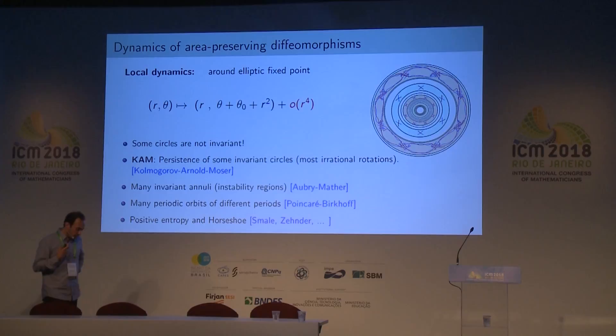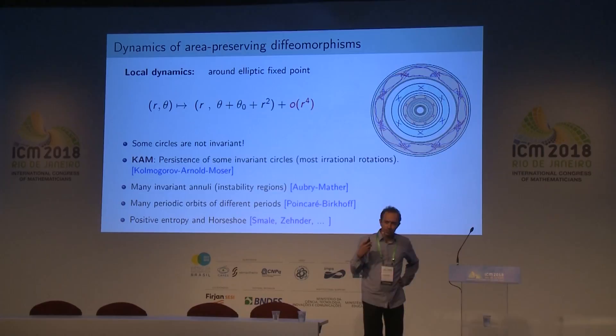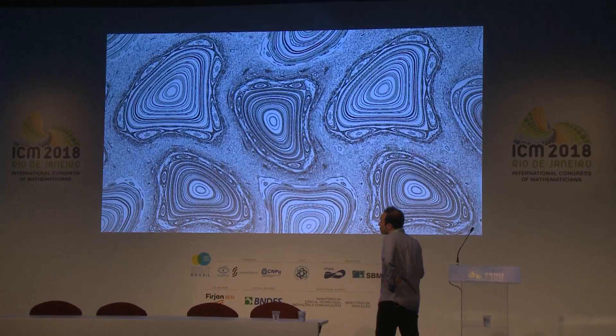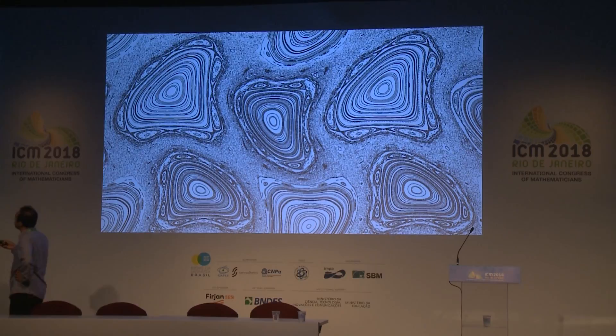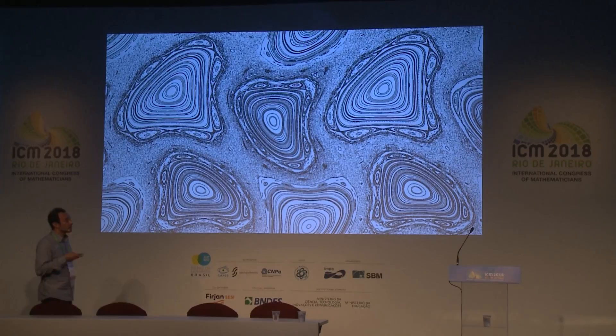Those periodic points generate very rich dynamics, and we observe the existence of homoclinic intersections, which provide horseshoes and hyperbolic behavior. This local picture, while not describing everything around the fixed point, accounts for a considerable part of the dynamics. But what happens when we want to understand global dynamics? A huge part of the dynamics is not described by local theory, and that is a real challenge.